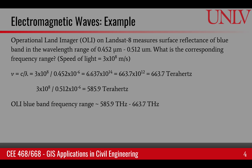The Operational Land Imager measures the blue band in the wavelength range of 0.452 to 0.512 micrometers. If we convert these to frequency by dividing the speed of light by the wavelength, the corresponding frequency range would be 585.9 terahertz to 663.7 terahertz.